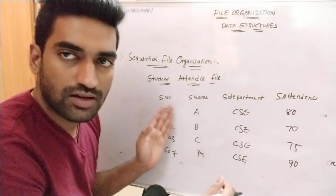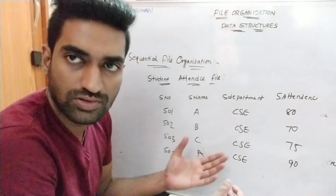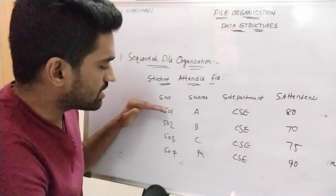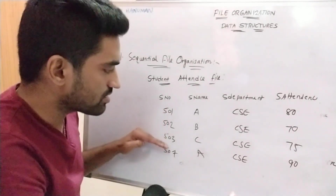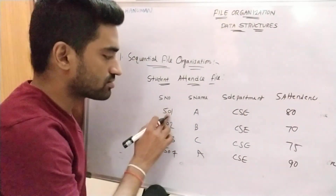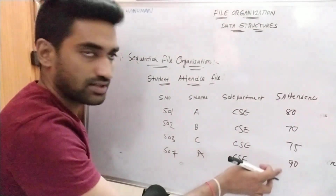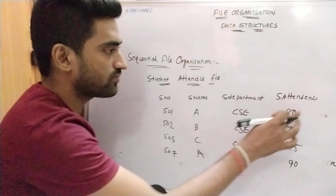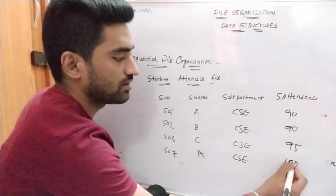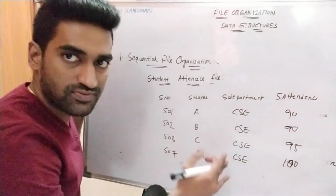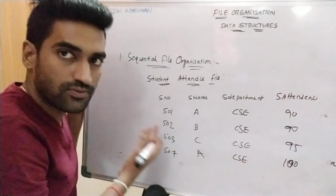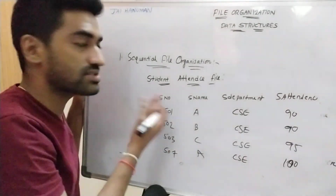After completion of each month, the teacher wants to update the student attendance. For that purpose, the teacher sequentially processes the records in the file one by one. For suppose, after the next month the updated attendance becomes: 501 updated to 90, 90, 95, 100. The teacher searches sequentially for updation. This is the best example for sequential file organization.